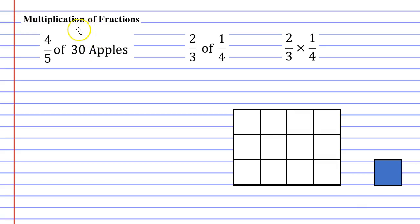So the first scenario we're going to look at is four-fifths of 30 apples. So sometimes we need to calculate the fraction of an amount. You might want to find four-fifths of 30 apples because you would like to give that much to a friend or a family member.